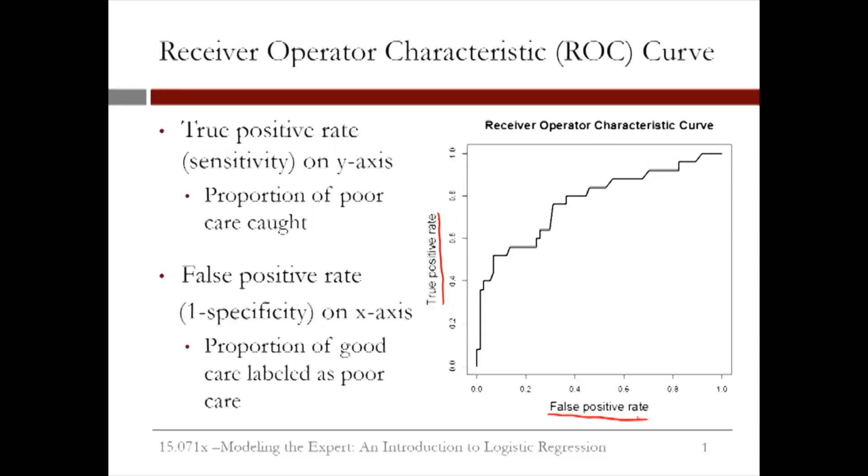The line shows how these two outcome measures vary with different threshold values. The ROC curve always starts at the point (0, 0). This corresponds to a threshold value of 1.